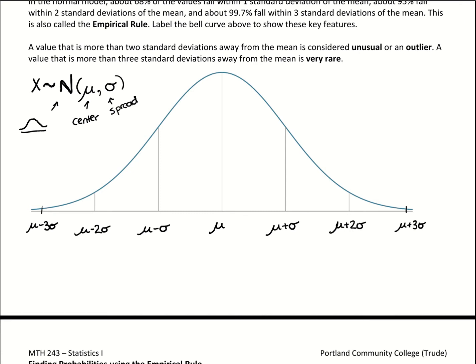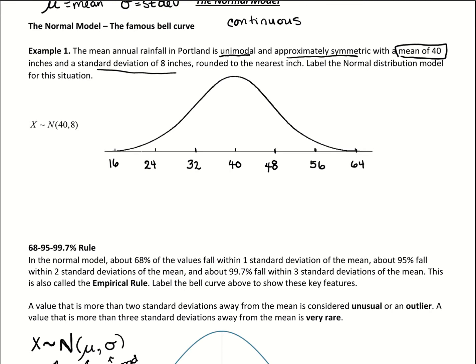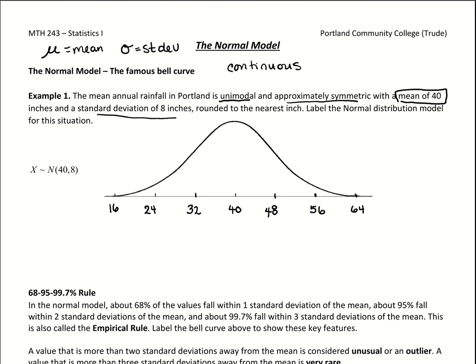That's how we can get a number line out with our bell-shaped curve — just give it a mean and standard deviation. Now, to find probabilities, we use the fact that the total area under the curve is 100%, or equivalently, one. So the total area under the curve equals one, meaning if we look at every possible annual rainfall for Portland from zero to positive infinity, there's a 100% chance of landing within that range.